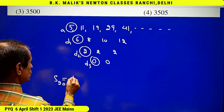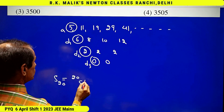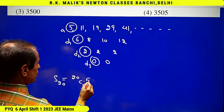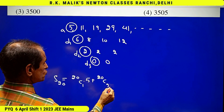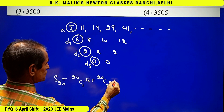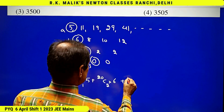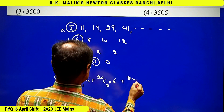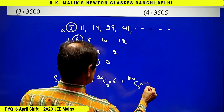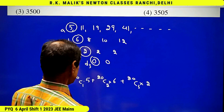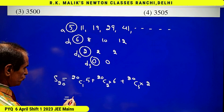In this case we have to find the sum of 20 terms. So S20 = 20C1·5 + 20C2·6 + 20C3·2, using the formula I have told you.